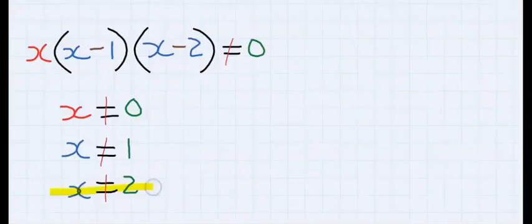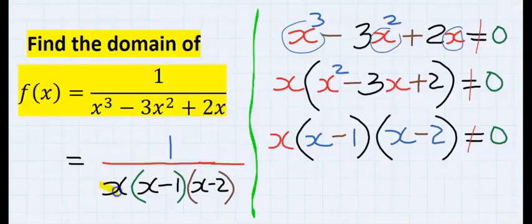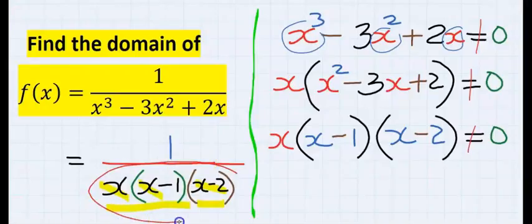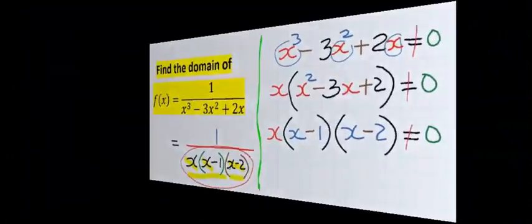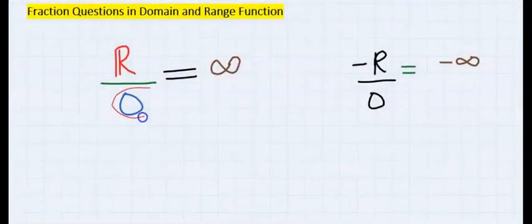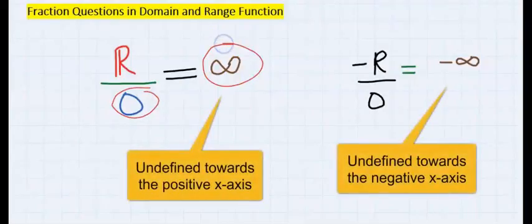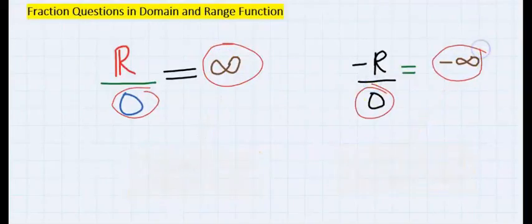Likewise, whenever x is equal to 2, we are going to substitute 2 here, and this will become 0, and 0 multiplied by everything here will give us 0 at the denominator. And 0 at the denominator turns a function to infinity, whether it is negative or positive integer.